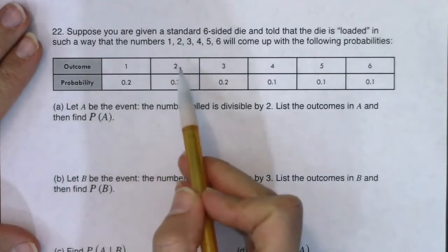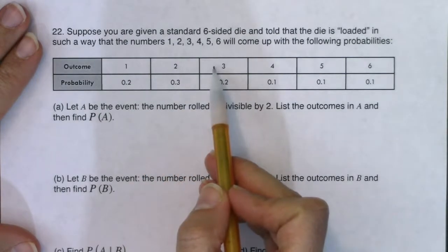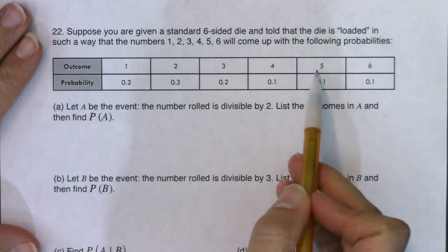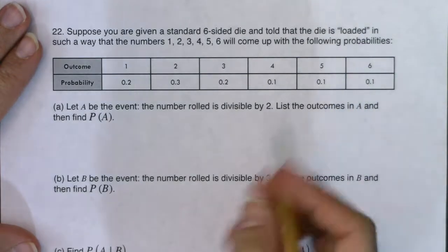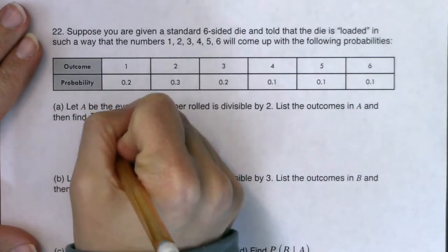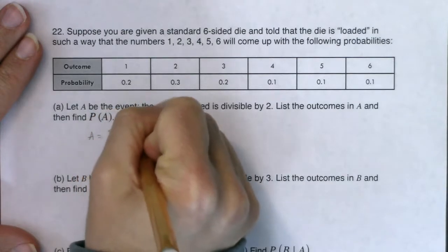One is not divisible by two, two is. Three is not divisible by two, four is. Five is not divisible by two, six is. So the outcomes in event A are two, four, or six.